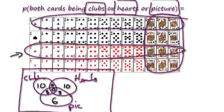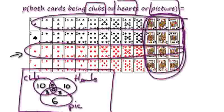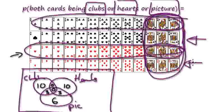Just looking at picture cards — three are clubs, three are hearts. So there are three here and three here, which means there must be six in the picture-only section.